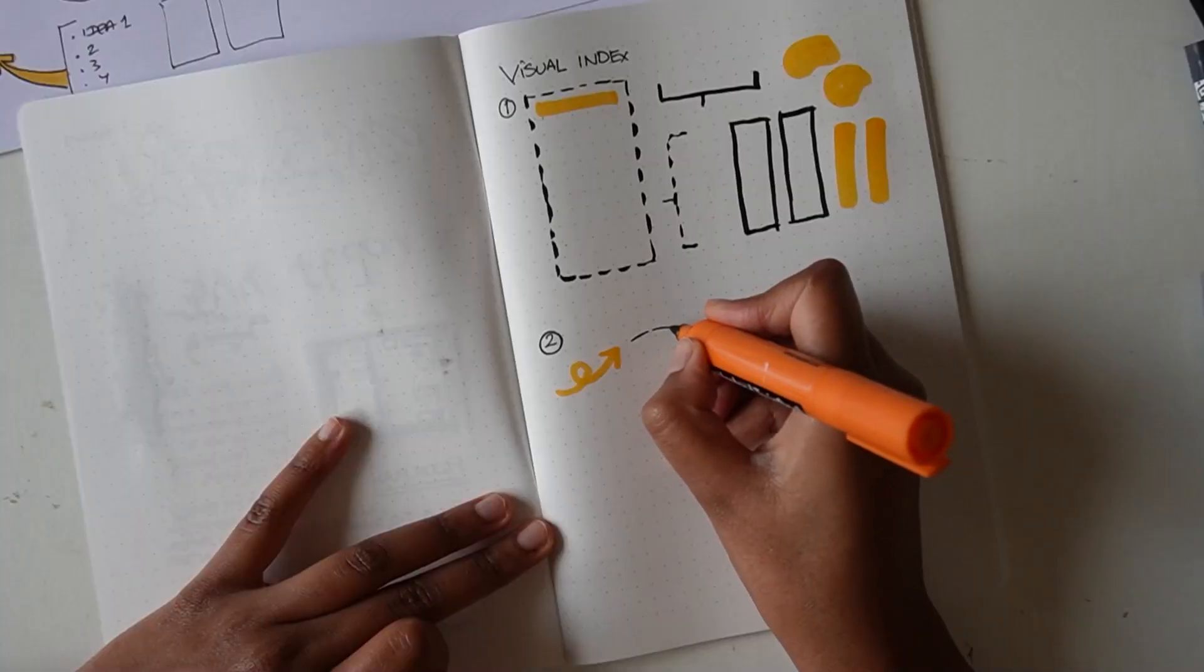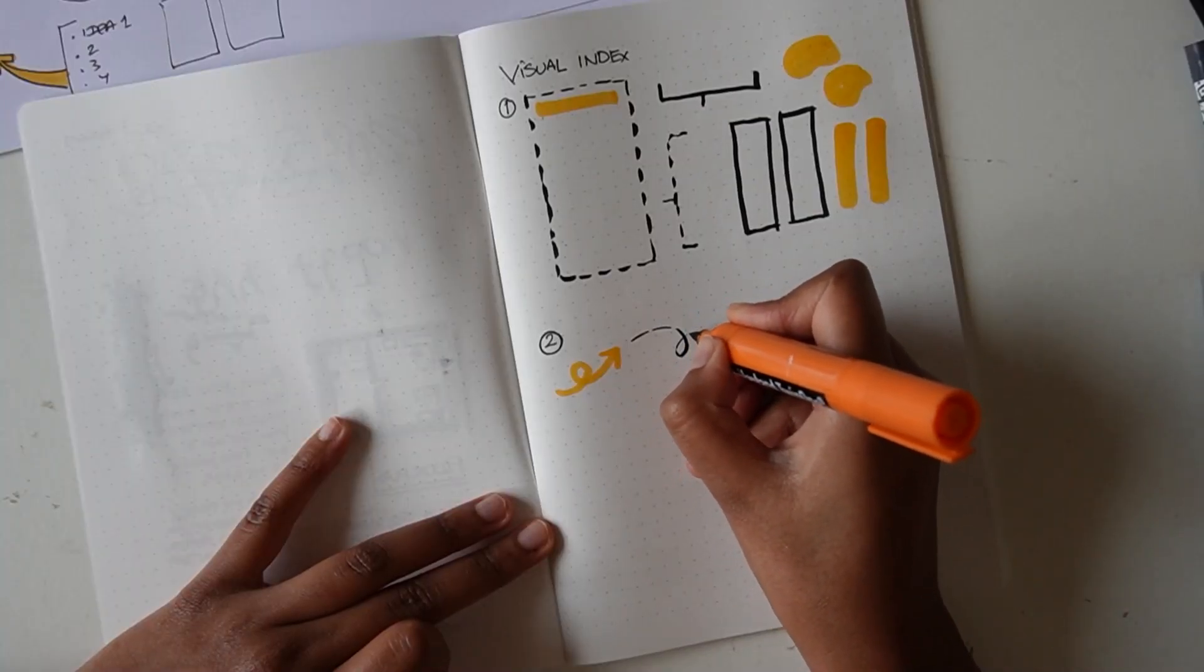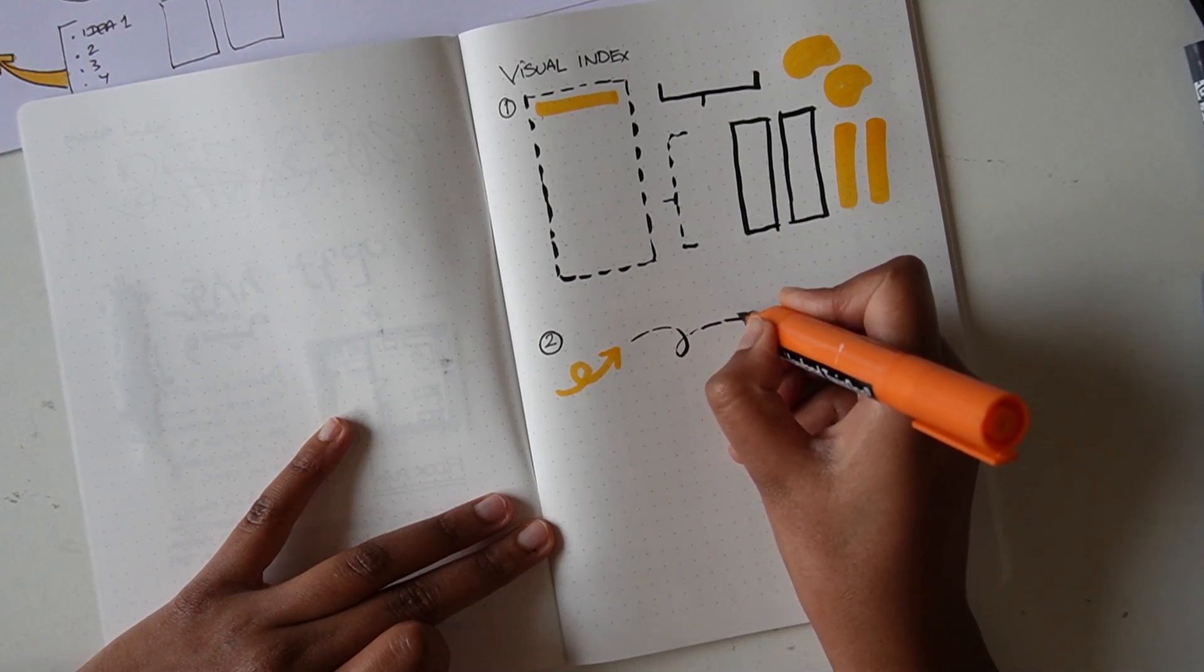For our class project, we'll be creating what I call a visual index, which you can have in the beginning of your journal, sketchbook, or any other medium that you use to be able to refer to it when you're taking visual notes in the future.